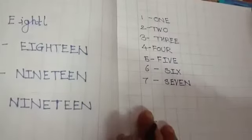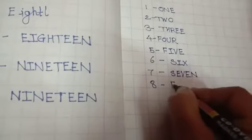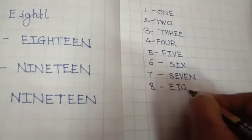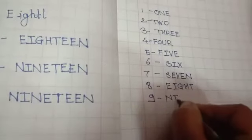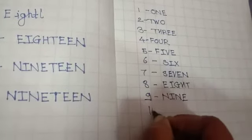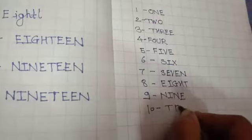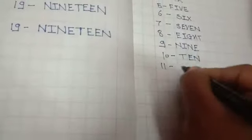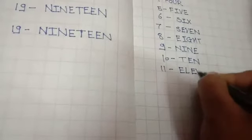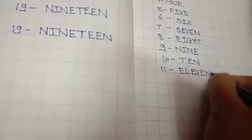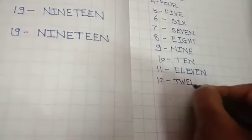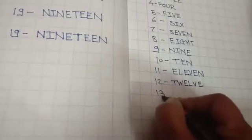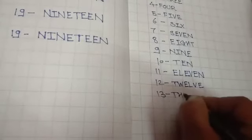Then E-I-G-H-T, eight. N-I-N-E, nine. T-E-N, ten. Then E-L-E-V-E-N, eleven. T-W-E-L-V-E, twelve. T-H-I-R-T-E-E-N, thirteen.